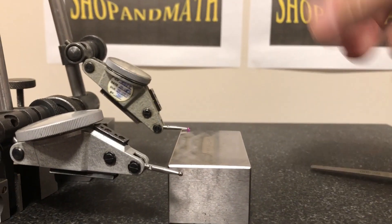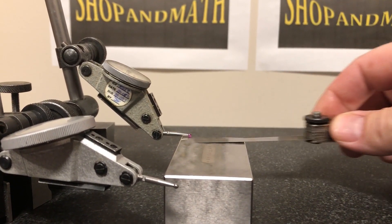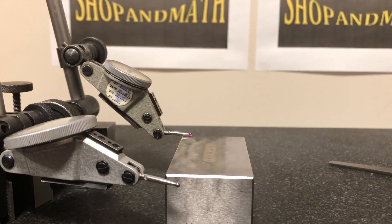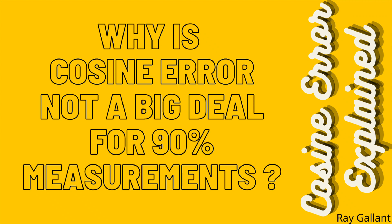So the moral of the story, and it's important best practice, is that you keep the indicator tip parallel to the workpiece to get a true measurement reading. Why is cosine error not a big deal for 90% of measurements? First of all, you now know about cosine error — that's half the battle. Most of the measurements you're going to be doing are comparative measurements, like indicating a four-jaw chuck or checking parallelism. It's very rare that you need a true actual measurement.